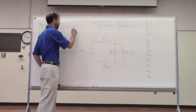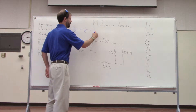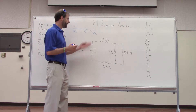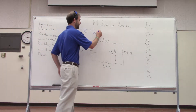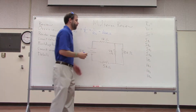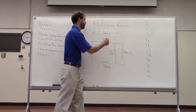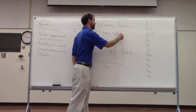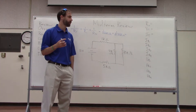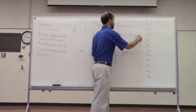So 1 over R_total equals 1 over R1 plus 1 over R2. R1 is 2kΩ. I convert to raw units before doing the calculations, so that's 1 over 2,000 ohms plus 1 over 10,000 ohms. R_total comes out to be 1.67 kilohms.